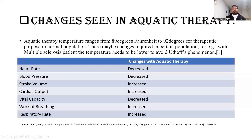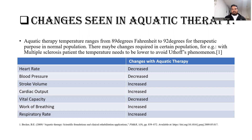The first condition is aquatic therapy. Aquatic therapy is when you immerse a person in water for exercise or therapeutic purposes. The temperature ranges from 89 to 92 degrees Fahrenheit for a normal population. However, for conditions intolerant to heat — like multiple sclerosis — the temperature would be lowered to about 82 degrees Fahrenheit to avoid Uhthoff's phenomenon.